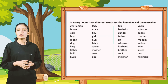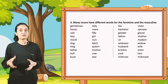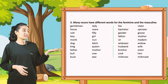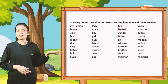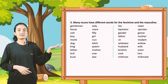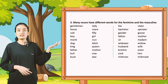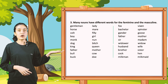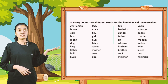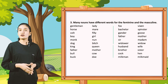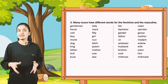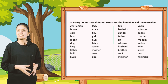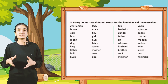Number 3: many nouns have different words for the feminine and masculine. Examples: gentleman, lady; horse, mare; colt, filly; boy, girl; monk, nun; dog, bitch; fox, vixen; bachelor, spinster; gander, goose.